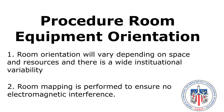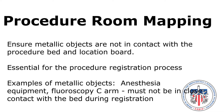Procedure room equipment orientation will vary depending on space and resources, and there is wide institutional variation. Room mapping is performed first. The process of mapping involves positioning equipment as one would for a procedure and then assessing for electromagnetic interference that could impact accuracy of navigation. This would include the procedure bed, anesthesia machine, and other metallic equipment. Metallic equipment is kept away from the procedure bed so as not to cause interference. If no electromagnetic interference occurs, that equipment orientation should then be the same with each procedure to help prevent future electromagnetic interference.